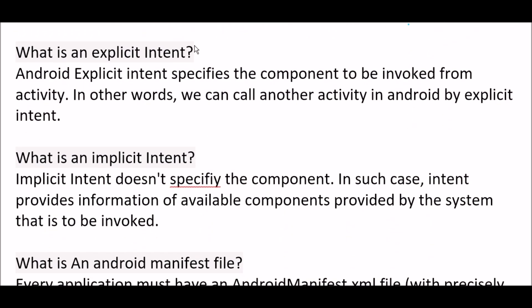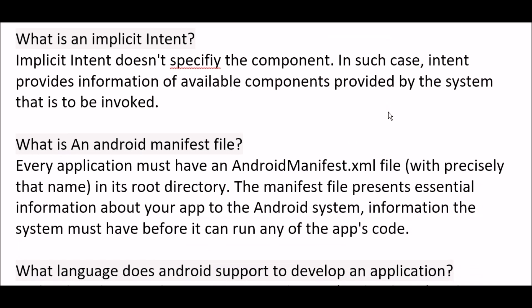Next question: what is an explicit intent? An explicit intent specifies the component to be invoked from an activity — in other words, we can call another activity using an explicit intent. Next question: what is an implicit intent? An implicit intent doesn't specify the component; instead, it provides information of available components provided by the system that is to be invoked.